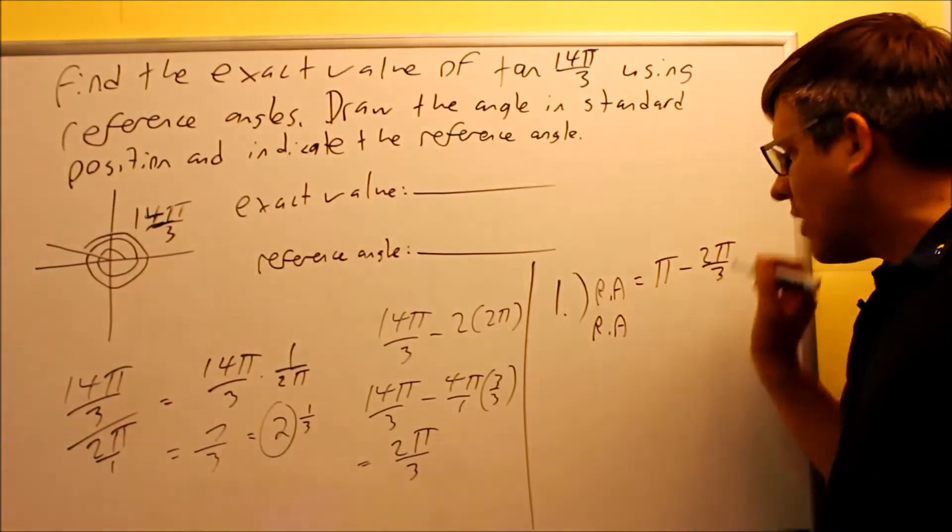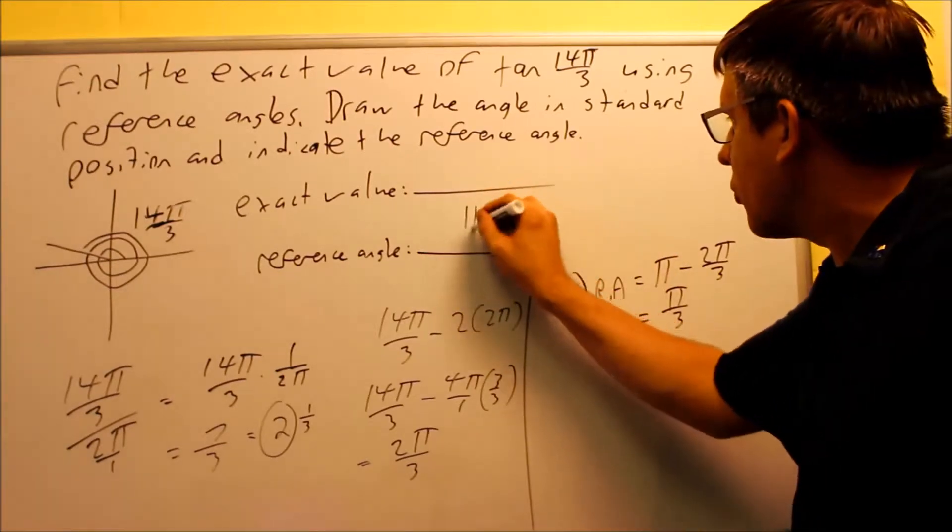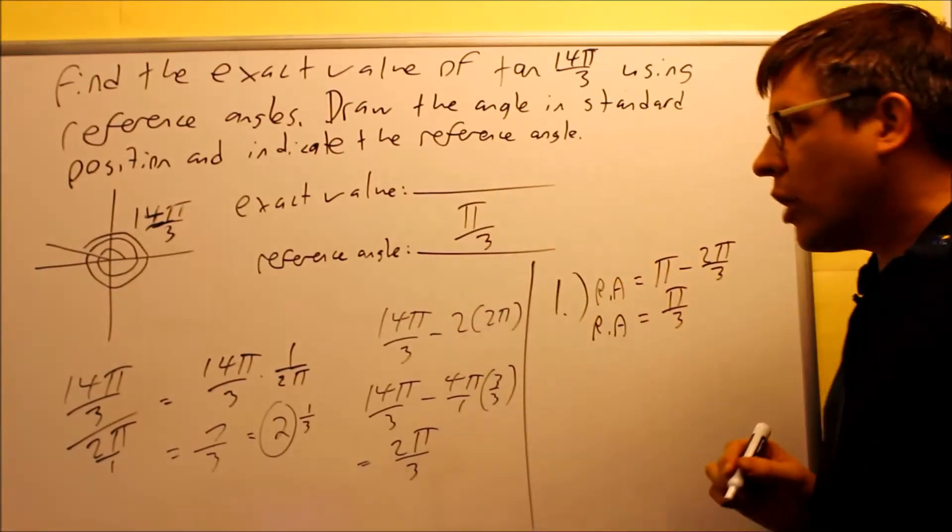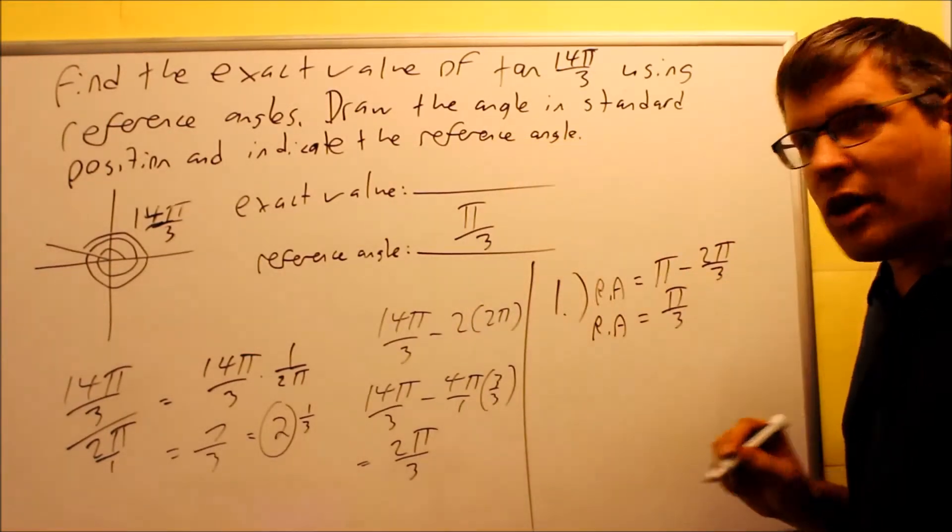So when I subtract that with common denominators, I get that my reference angle is π over 3. And I'm going to put that right here. That's my reference angle. That answers the first part of that three-step process to get the exact value.